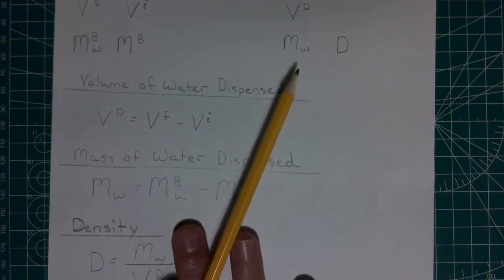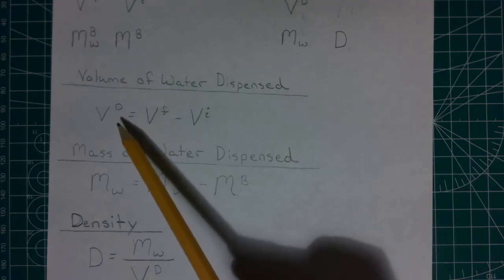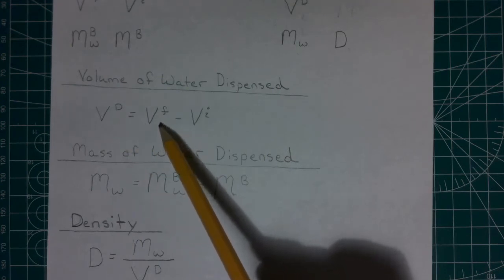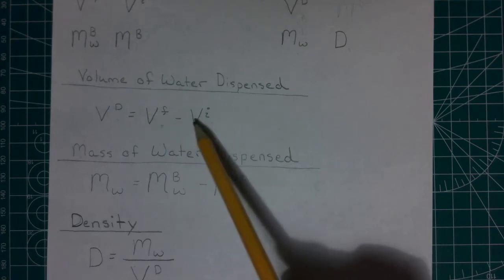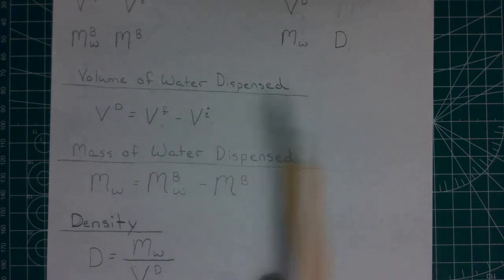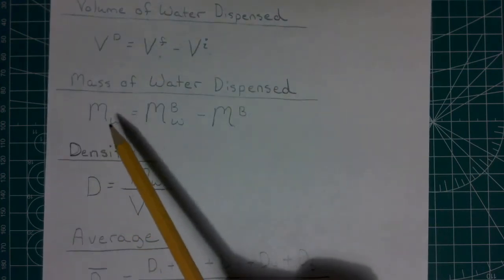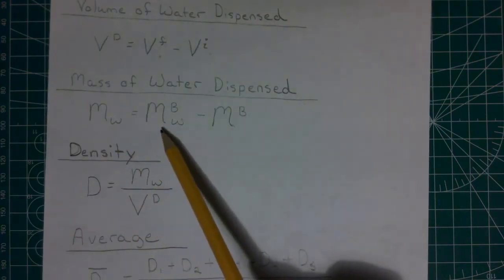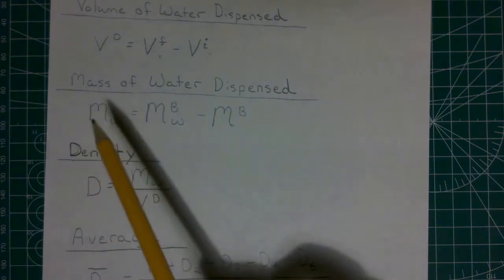As you saw in the video, the volume delivered from a burette is going to be calculated by the final volume reading you have minus the initial volume reading. So that's going to tell us how much volume we delivered. We're going to use our mass by difference equation here by taking the mass of the beaker in the water, subtracting the mass of the beaker to get the mass of the water.